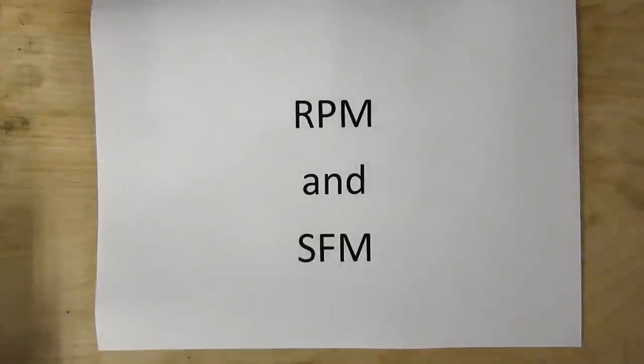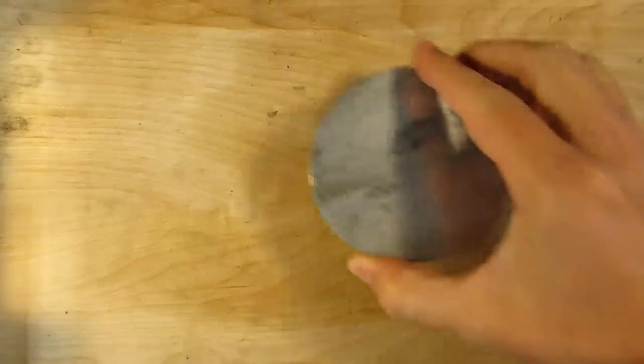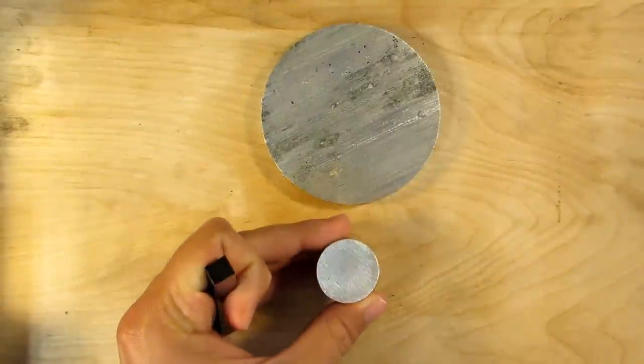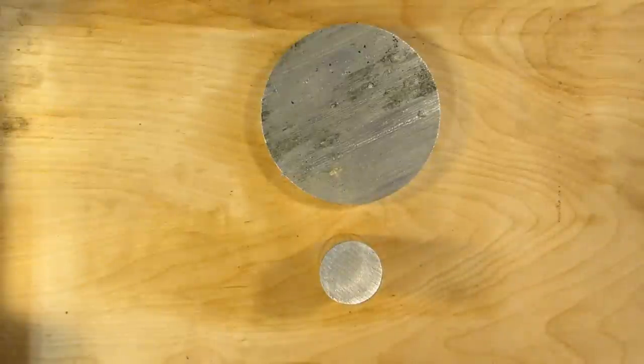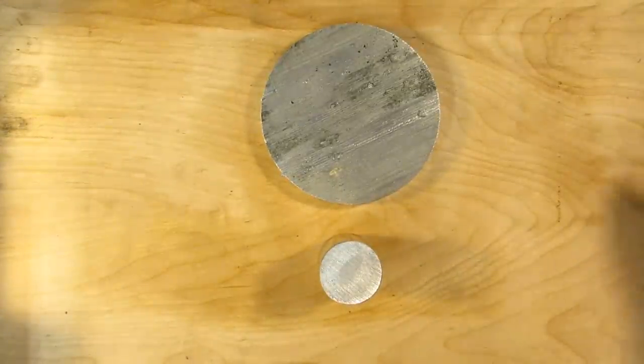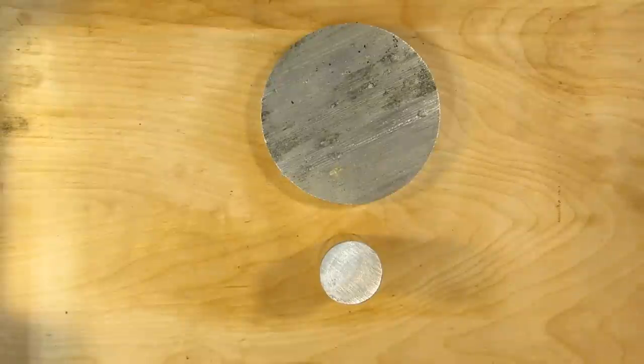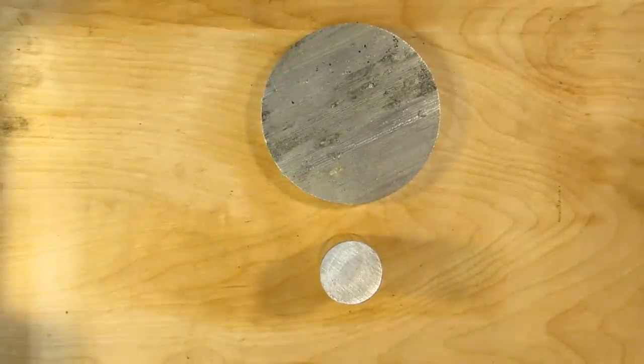Your material and the diameter of your material impact what your RPM should be. So I've got two pieces of aluminum here. One of them is larger than the other, and when we talk about RPM, the critical thing in figuring out what your RPM should be is what is called surface feet per minute, and that's your cutting speed.